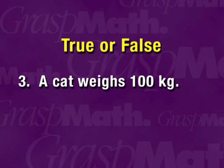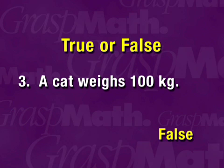Next: a cat weighs one hundred kilograms — true or false? A kilogram is about two and two-tenths pounds, so one hundred kilograms would be around two hundred twenty pounds. A cat weighing two hundred twenty pounds — we're going to say that's false.